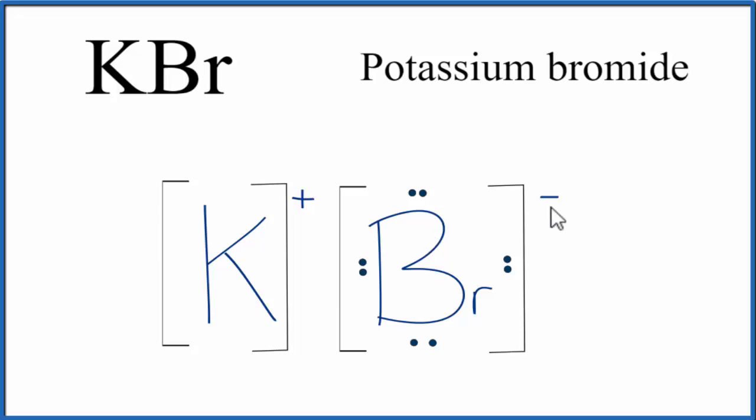Note that this is what we call a formula unit. With ionic compounds, they're in a crystal, and they're made up of a group of repeating formula units. This is useful, though, because it shows us how the electron was transferred from the potassium to the bromine, completing the octet of the bromine and making it very stable. This is Dr. B, with the Lewis structure for KBr, potassium bromide. Thanks for watching.